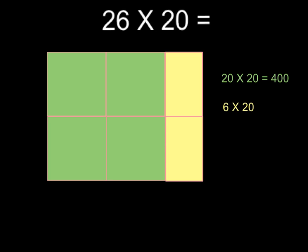What we're going to do then is find the two partial products. 20 times 20, well, 2 times 2 is 4, plus the two zeros gives you 400. Remember that lesson. 20 times 20, and 6 times 20, 6 times 2 is 12, plus 1 zero gives you 120. So our two partial products are 400 and 120.